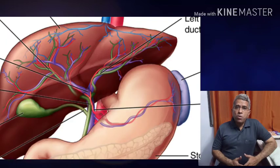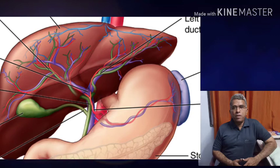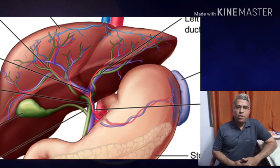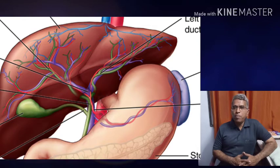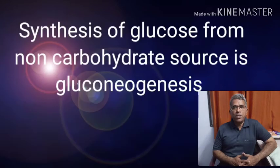Liver is also the seat of lipogenesis, which is nothing but fat synthesis. Gluconeogenesis also occurs within the liver — the formation of glucose from sources other than carbohydrates, such as amino acids, is called gluconeogenesis.